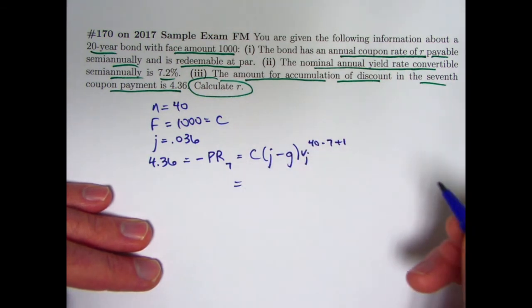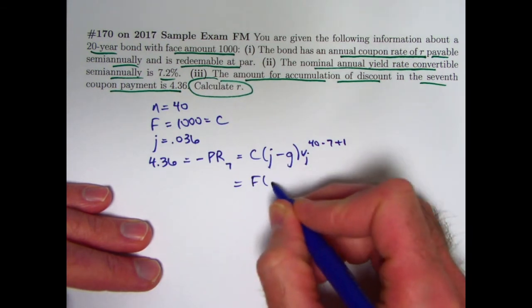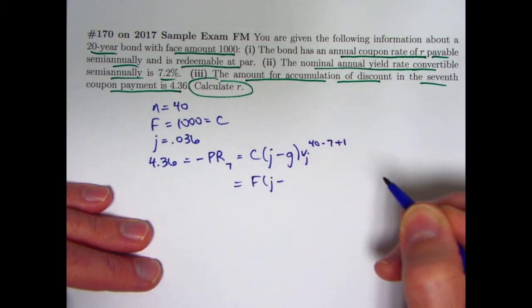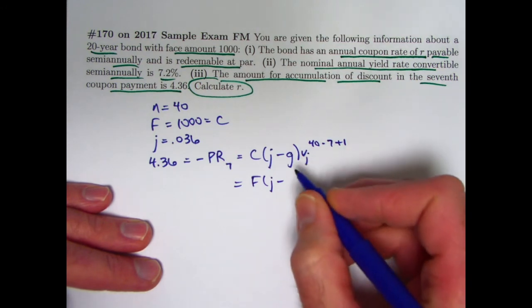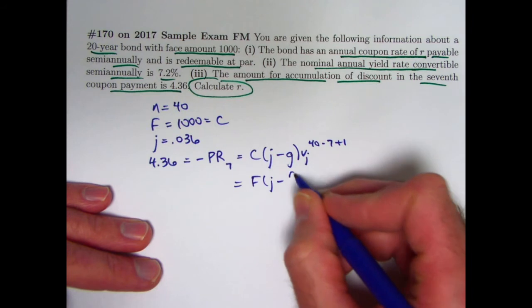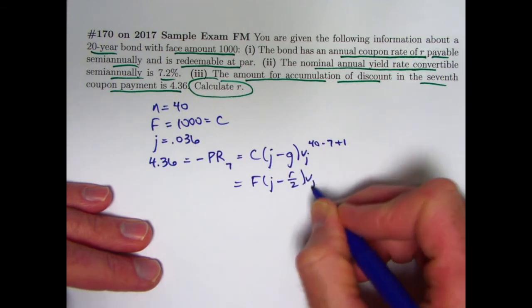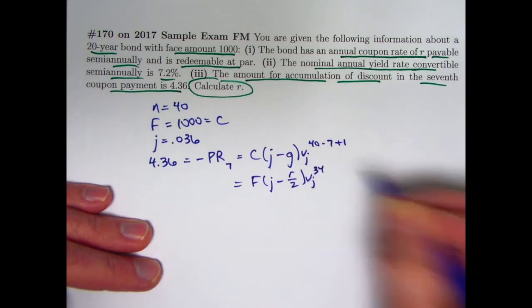Again, because the bond is redeemable at par, the C can be replaced with F and the G can be replaced with the effective semiannual coupon rate, which would be R over 2, not R, like I mentioned earlier. And this would be to the 34th power here.